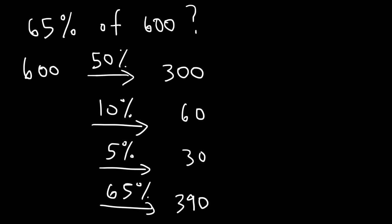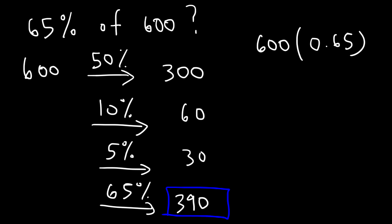And that's going to be the answer. So 390 is 65% of 600. And just to confirm, you multiply 600 by 0.65, and that will give you 390.